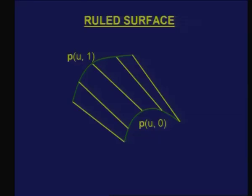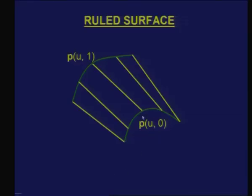Visually, a ruled surface is formed by taking corresponding parameter values — say u = 0.5 on each of the two boundary curves — and joining them with a straight line. Doing this for all parameter values generates the ruled surface shown here.